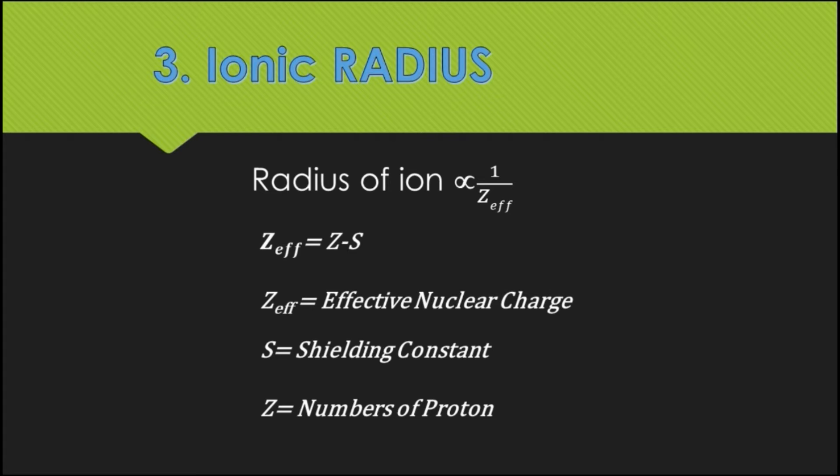It is described by Pauling's method. Here, the size of the ion is inversely proportional to the effective nuclear charge. Effective nuclear charge, Z_eff, means how many individual electrons experience the positive charge in the polyelectronic atom.